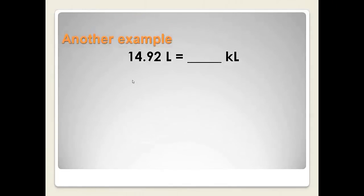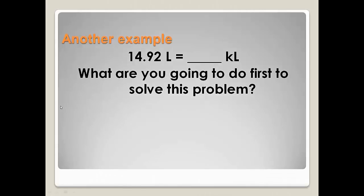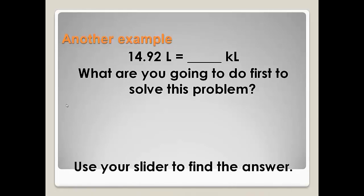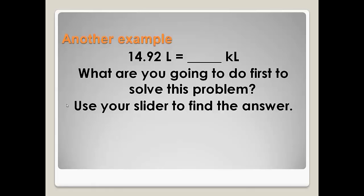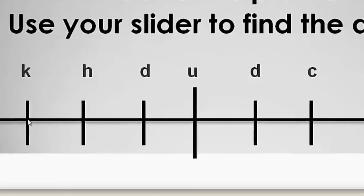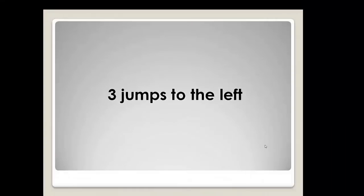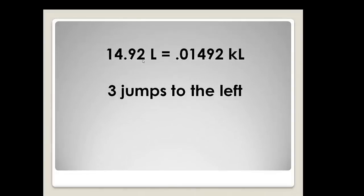Let's do another example. 14.92 liters is how many kiloliters? What are you going to do first to solve this problem? Pause the tape now and talk to someone around you or write down what your first step is going to be. Hopefully you did pause the tape because you're going to use your slider to find out the answer. There's the slider. We're going to start on liters. Liter went under our units or root word column. We're going to go from liters to kilo. So let's count: 1, 2, 3 to the left. And indeed, three jumps to the left. 14.92 liters becomes 0.01492 kiloliters.